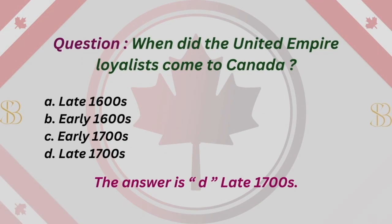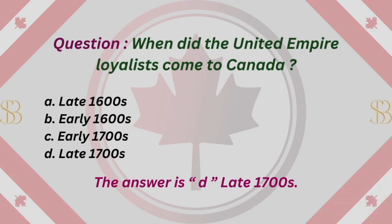Question: When did the United Empire Loyalists come to Canada? A. Late 1600s. B. Early 1600s. C. Early 1700s. D. Late 1700s. The answer is D. Late 1700s.